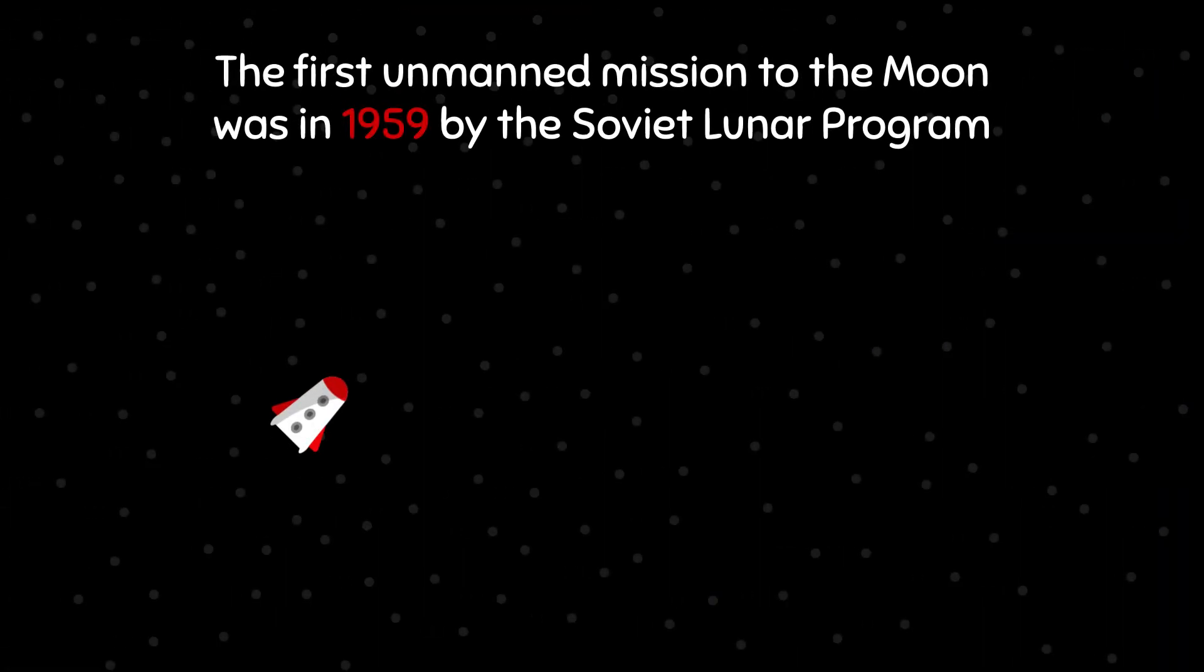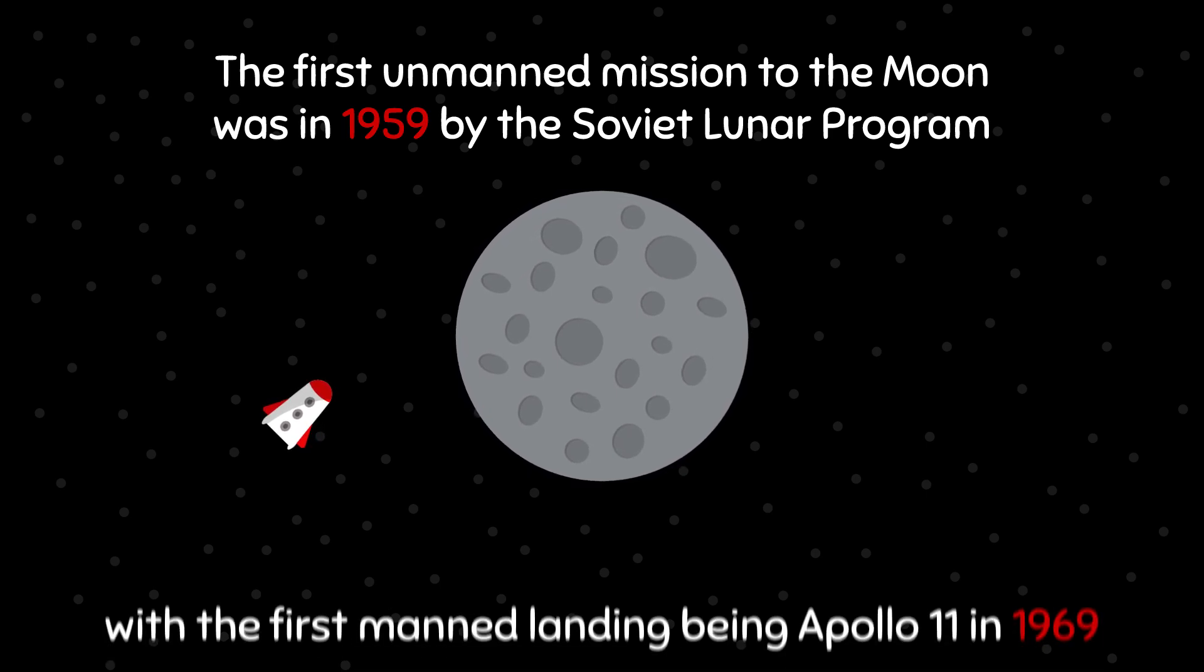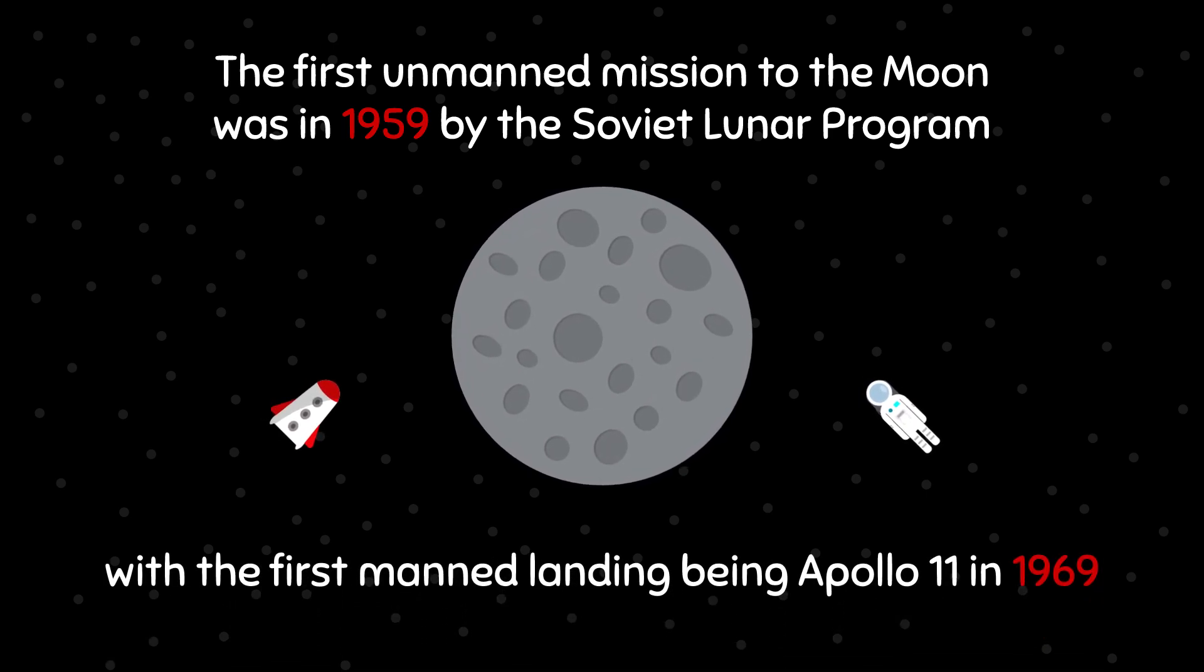The first unmanned mission to the Moon was in 1959 by the Soviet lunar program, with the first man landing being Apollo 11 in 1969.